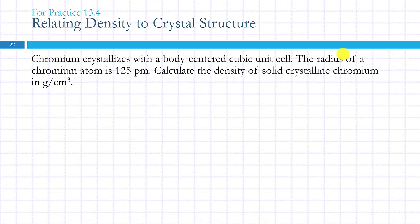It says chromium crystallizes with a body-centered cubic unit cell. Important information: it's chromium the element, it's a body-centered cubic unit cell, and the radius is 125 picometers. Calculate the density of solid crystalline chromium in grams per centimeter cubed.